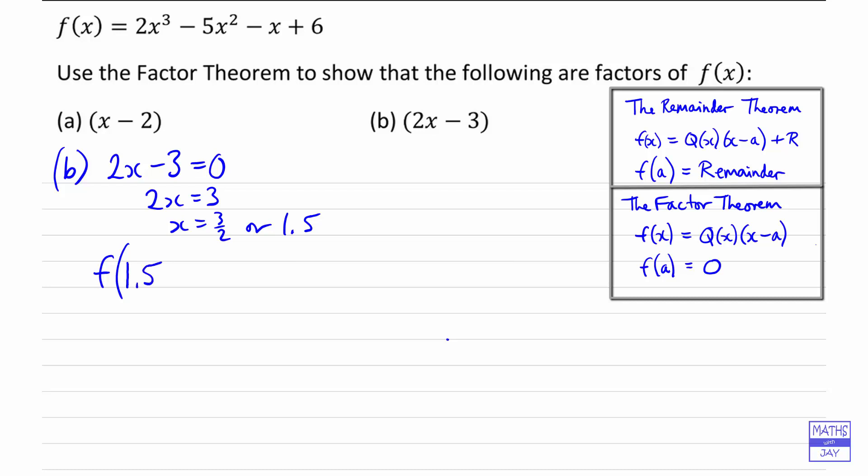So we're going to work out f(1.5), so 2 times 1.5 cubed minus 5 times 1.5 squared minus 1.5 plus 6. Working those out, we get 6.75 minus 11.25 minus 1.5 plus 6.